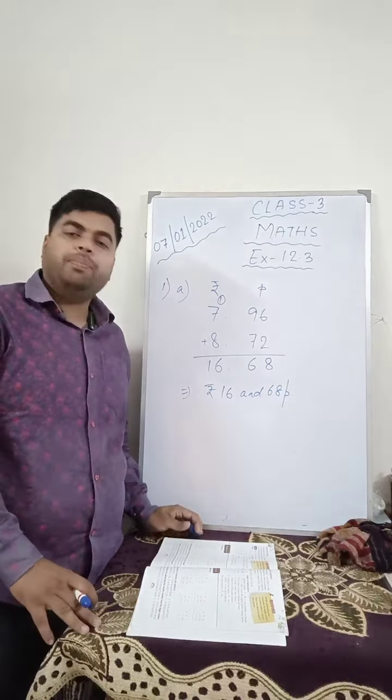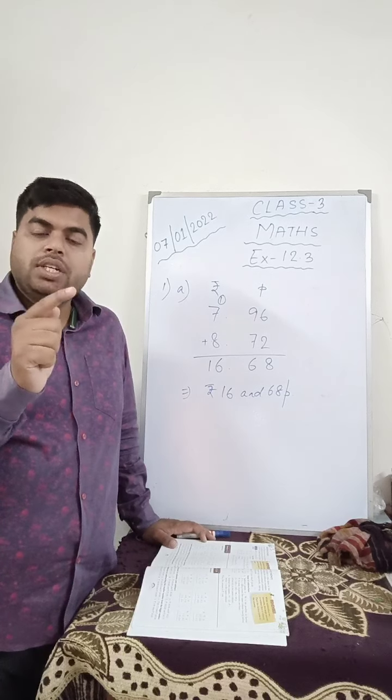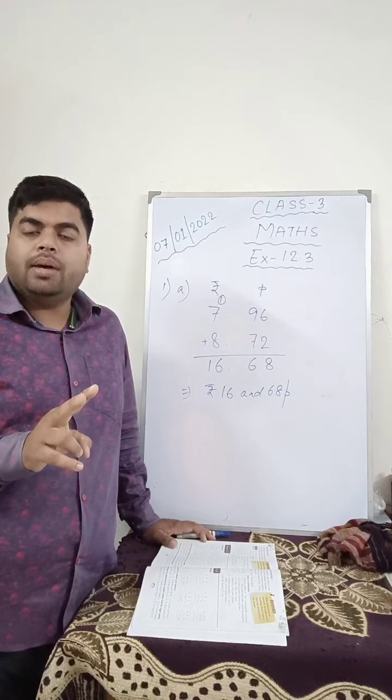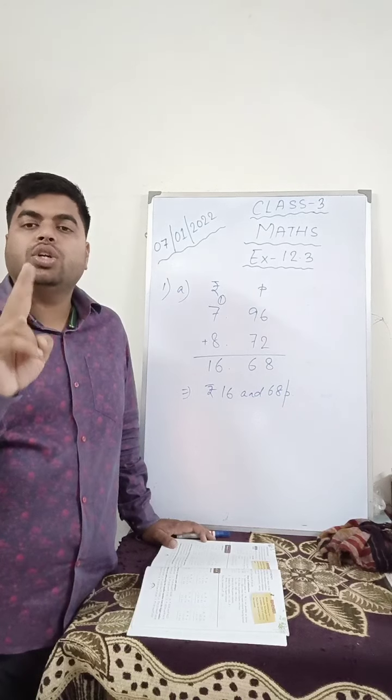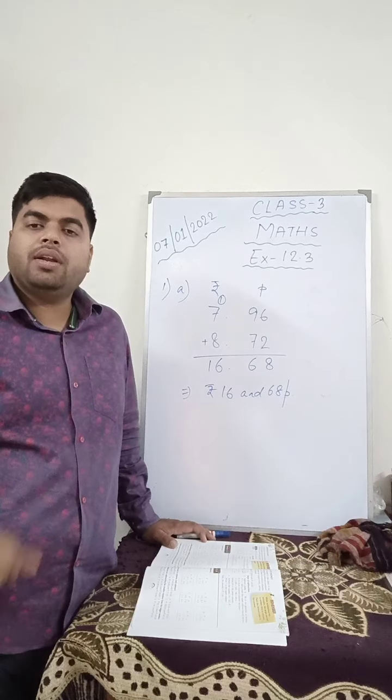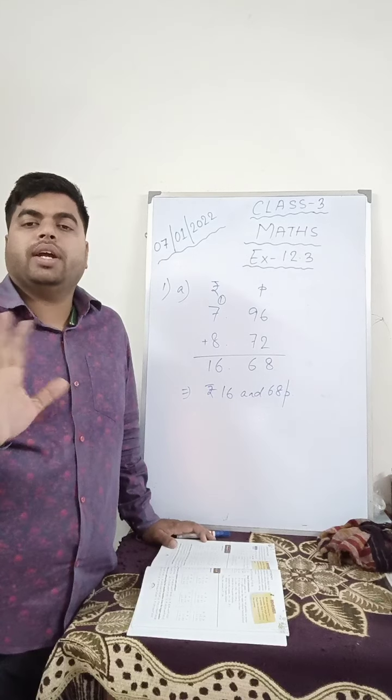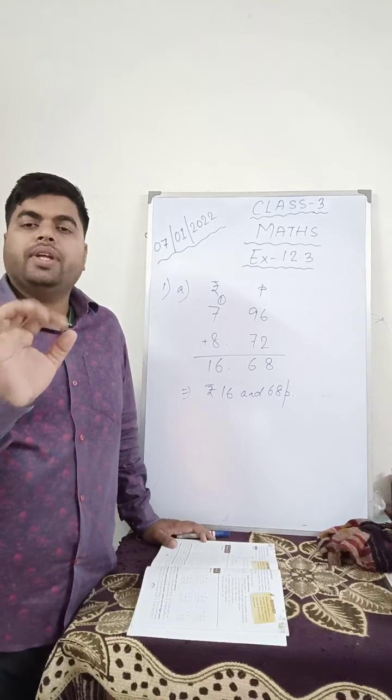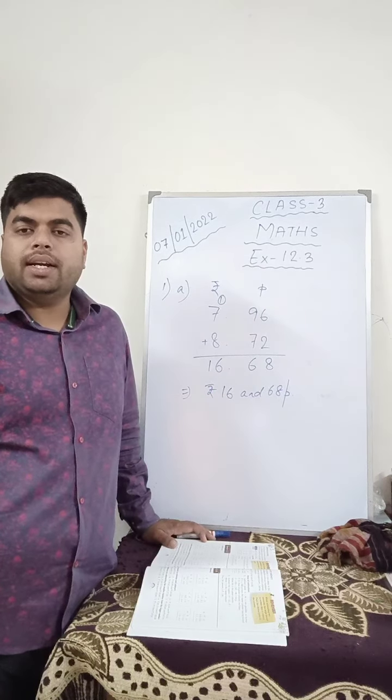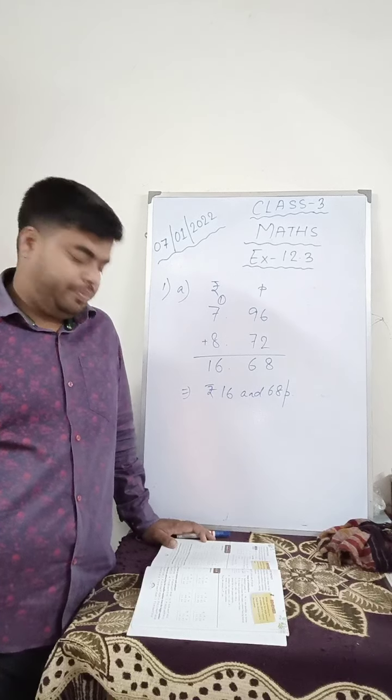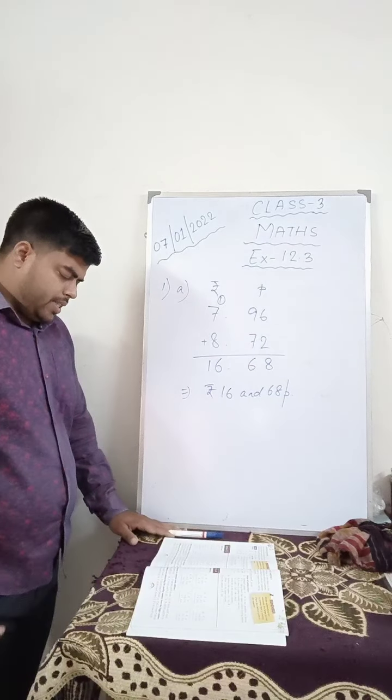Sometimes, suppose if they give you rupees and under the heading paisa they give you only one digit. In that case, you have to add zero to make the number of digits under the heading paisa two digits, as you have done in the chapter measurement. If you don't make it two digits, then you will never get the correct answer. Only if they give you single digit under the heading paisa. This is very simple.